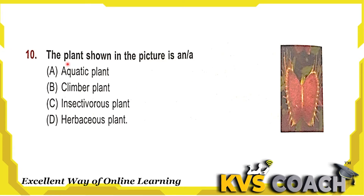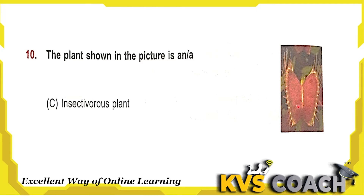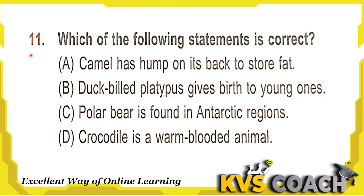Next question: the plant shown in the picture is what? This is an insectivorous plant. It is not an aquatic plant, not a climber plant, and not a herbaceous plant. It is an insectivorous plant which traps insects and then eats them. Option C is the right answer.